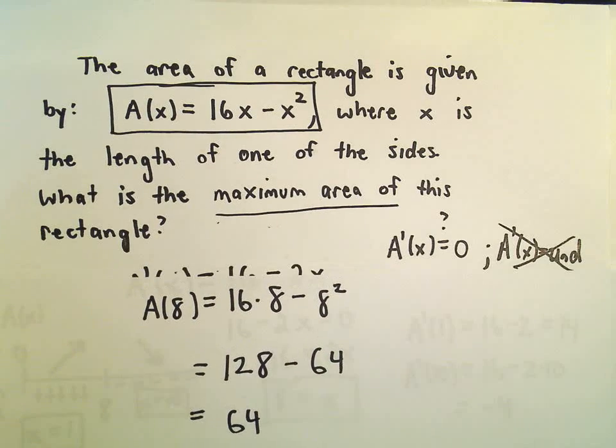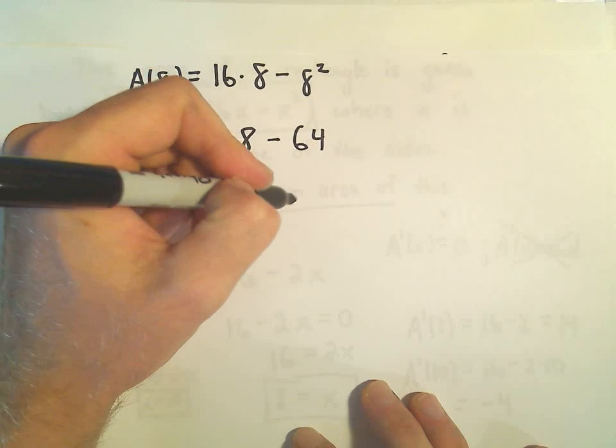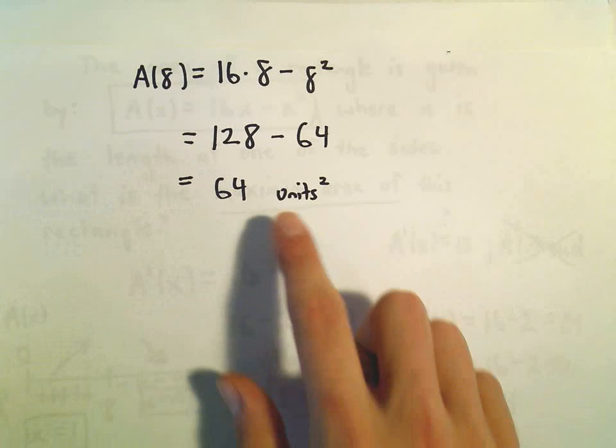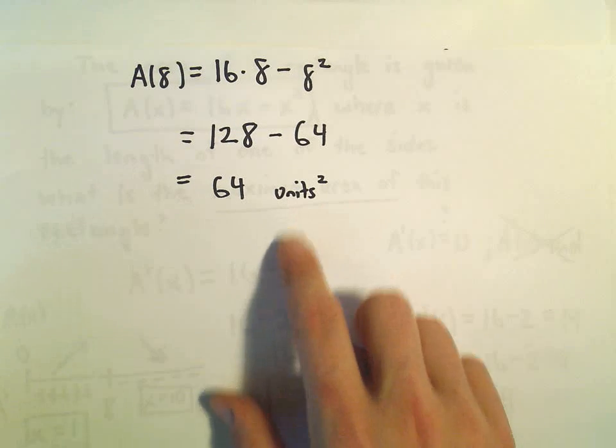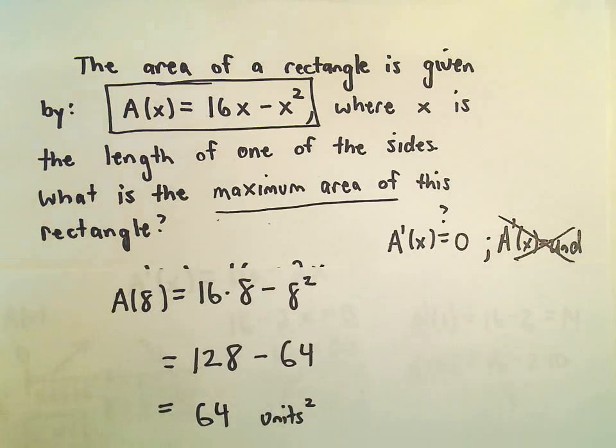I don't think we really have units on here. So it would be 64 units squared, whatever we're talking about. So feet squared or meters squared or inches squared, whatever the original units are on your rectangle.